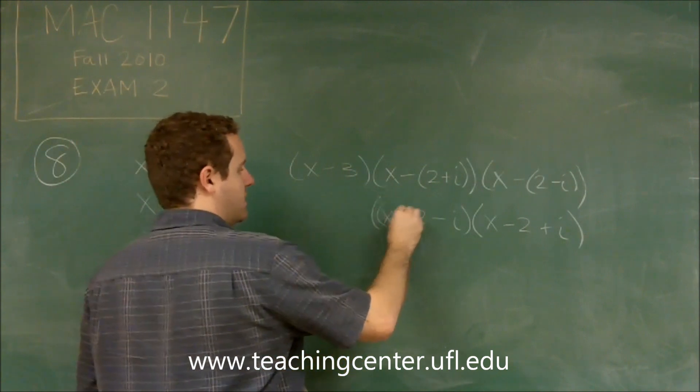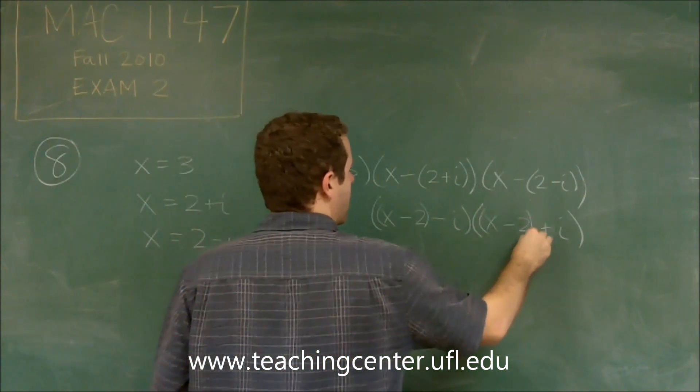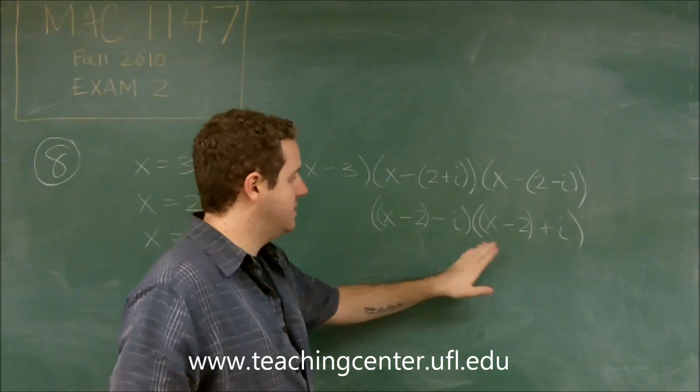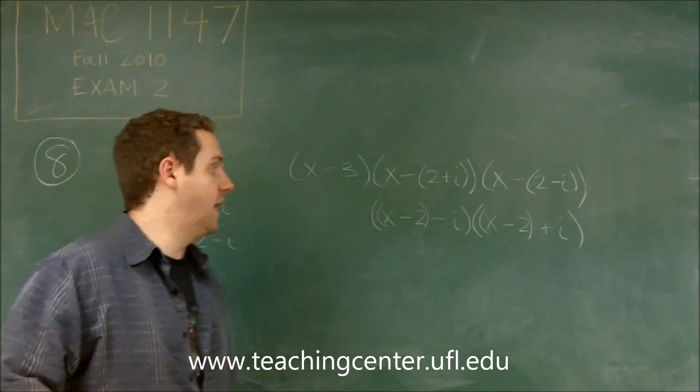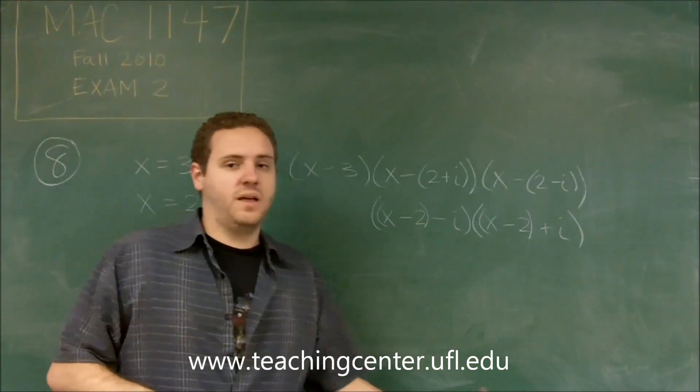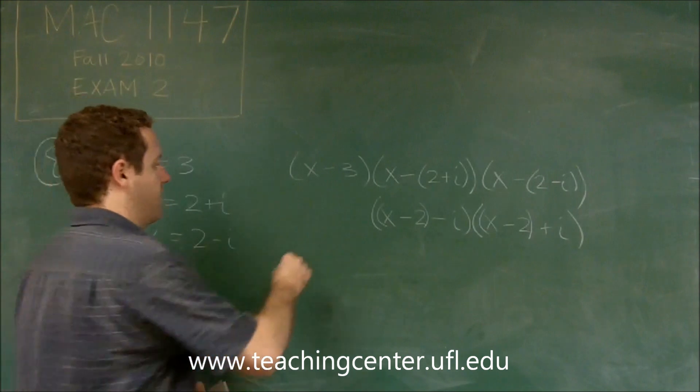You can see that now by grouping these in this way, we have a difference of two squares because we have x minus two minus and x minus two plus the same thing, i. So that makes calculating these two a bit easier and then we'll do the x minus three afterwards.